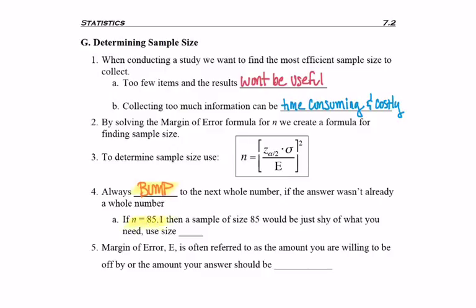Like, if we calculate that we need a sample size of 85.1 people, whatever it is we're sampling, then if we were only to take 85 items, it would be just shy of what we really need. So we should be sampling 86 items.